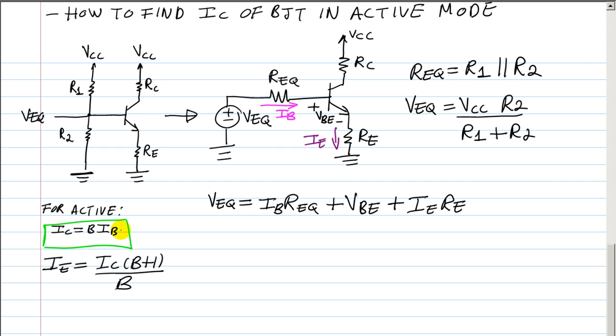Using these two formulas we can replace IB in terms of IC. From this equation we can get IB equal to IC over beta. So the next step is to get this expression and plug it in here, so that we have an equation in terms of IC, and that's the current we're looking for.